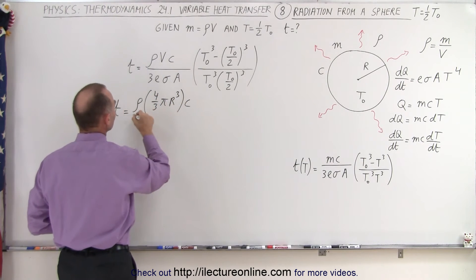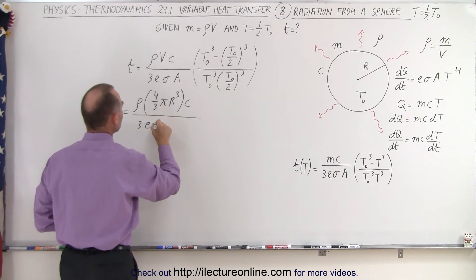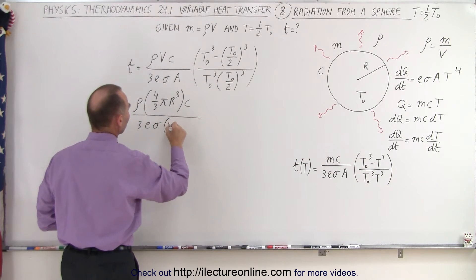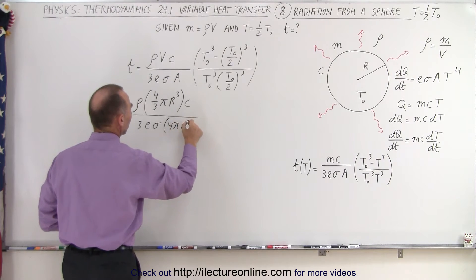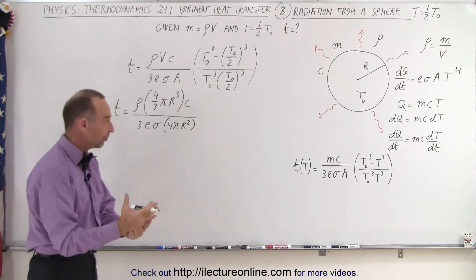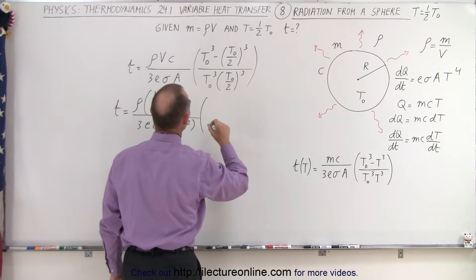Times C divided by 3Eσ, and this will become 4π r squared, which is of course the equation of the surface area of the sphere, and simplifying this a little bit more.